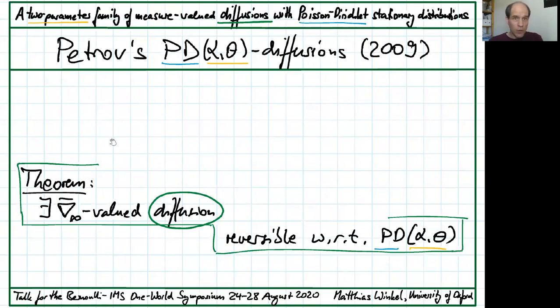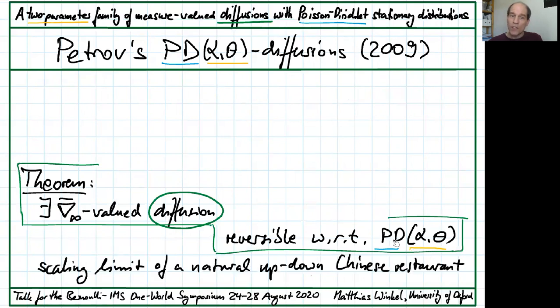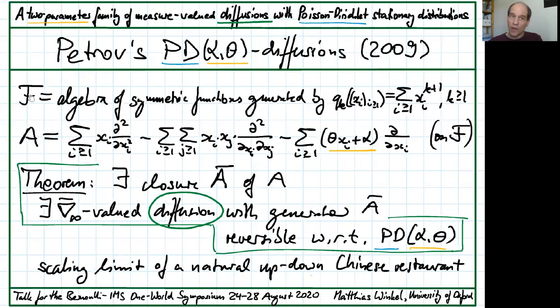Our study of measure-valued diffusions is motivated by Petrov's diffusions in the space of decreasing sequences. They are reversible with respect to Poisson-Dirichlet alpha-theta. More precisely, Petrov constructed them as scaling limits of a natural up-down Chinese restaurant process, and identified their generator as the closure of a pre-generator on an algebra of symmetric functions, with diffusive part, Wright-Fisher-like interactions, and what looks like two kinds of downward drift that bring in the two parameters, alpha and theta.